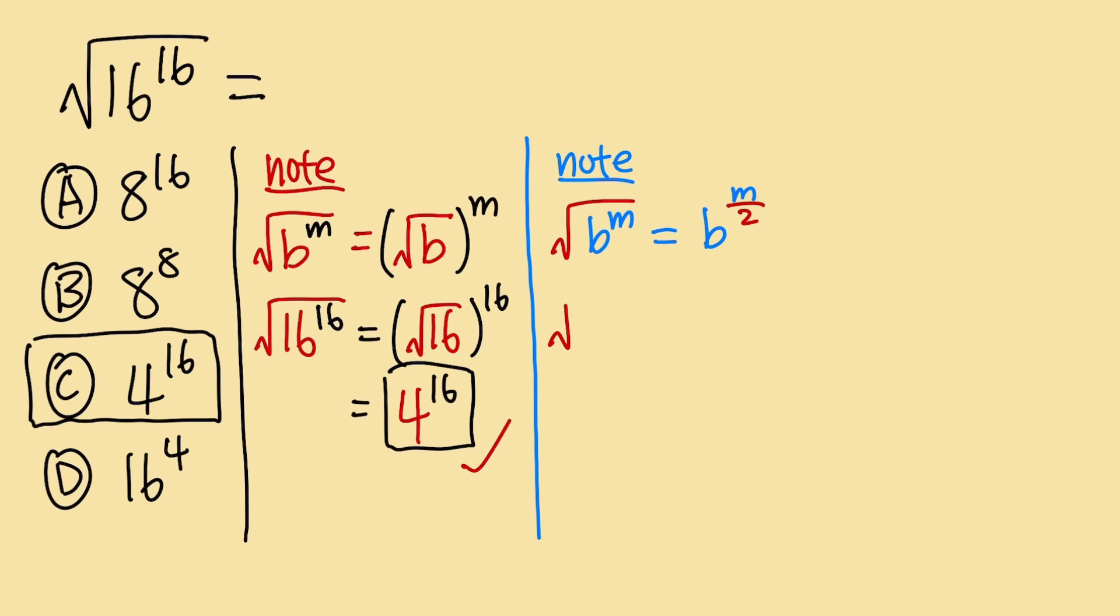So if we have square root of 16 to the 16th power, this will be equal to the base 16 stays the same, but the power 16 right here, we will have to divide this by 2 because of the square root. And then 16 divided by 2, that's just equal to 8. So here we have 16 raised to the 8th power.